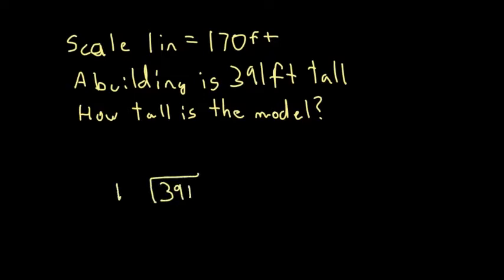170 will go in there twice, which is 0.14, and then 2 plus 1 is 3, so that'd be 340. So 391 minus 340 would give me 51. Add a decimal and a zero, bring the zero down. So 170 into 510 will be three times. Three times zero is zero, three times seven is 21, three times one is three plus two is five. So I get nothing left over, so it'd be two and three tenths inches.